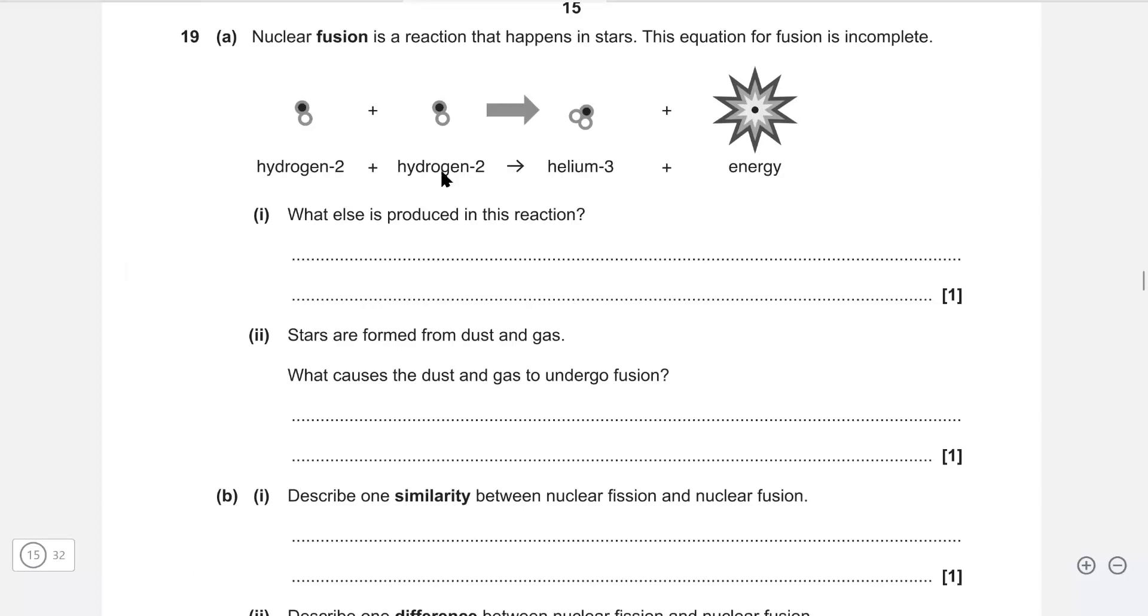Another one on nuclear fusion. We have this reaction which is incomplete. What else is produced in this reaction? We have hydrogen-2, so we can write this as H2-1 plus hydrogen-2, H2-1. That gives us helium-3, which is helium is 2. The fact that it's helium-3 means we're going to have 3 across here. We can clearly see the number of protons is balanced. However, the total mass number of protons plus neutrons is not balanced. Here we only have one neutron, whereas here we have two neutrons, meaning we must get an additional neutron.